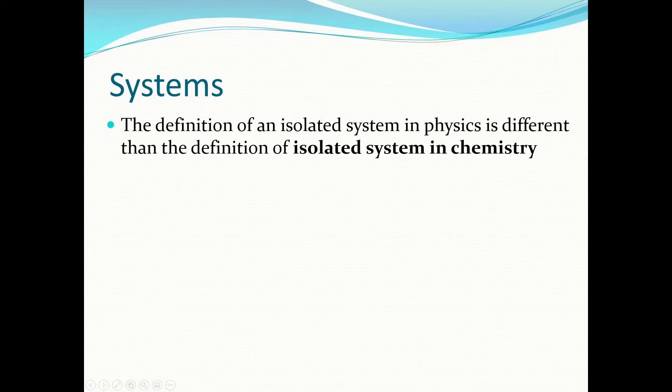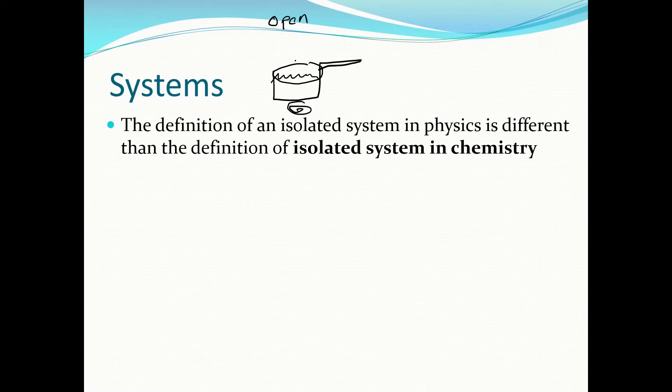The definition of a system in physics is different from an isolated system in chemistry. In chemistry, there are three types of systems. An open system — like a pot of boiling water — allows both matter and energy to enter or leave. In a closed system, if you put a lid on, matter is trapped but energy can still enter or leave.